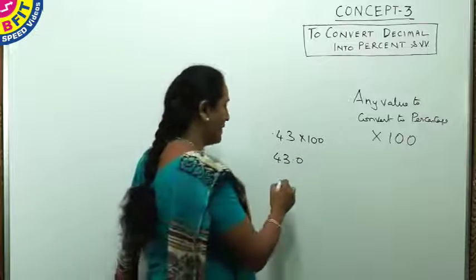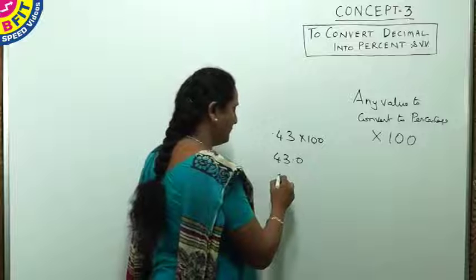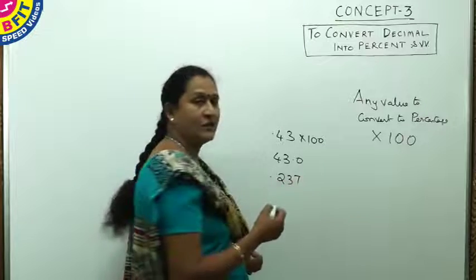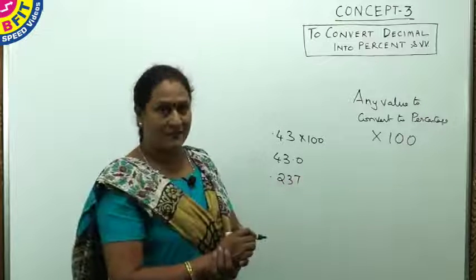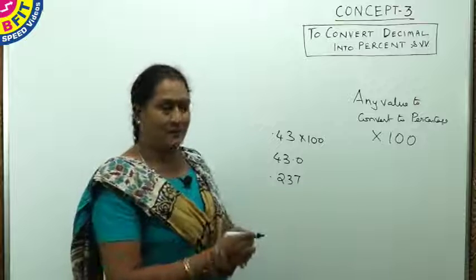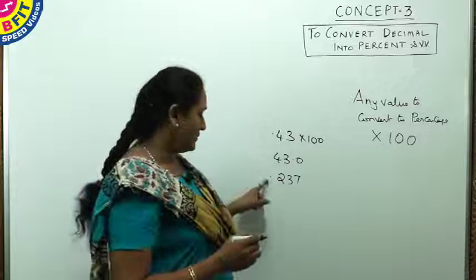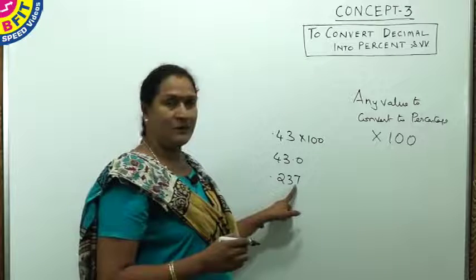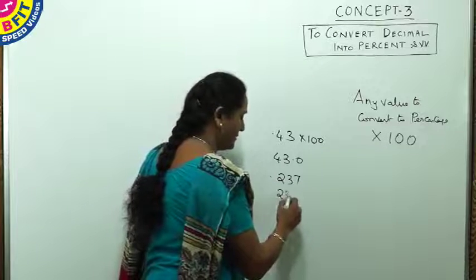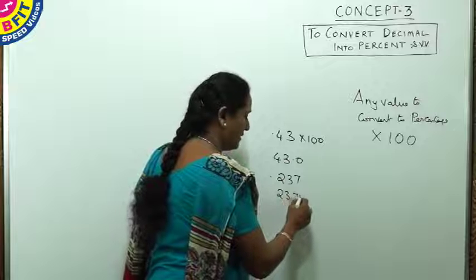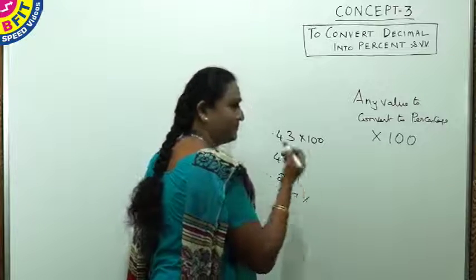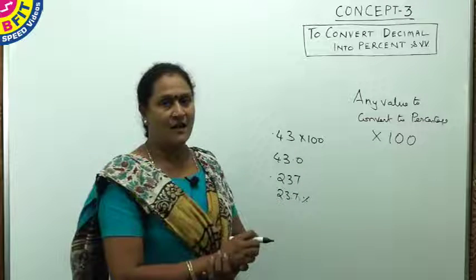Suppose you have another decimal. Multiplying it with 100, we get the percent. Shifting the decimal two places to the right, the answer is 23.7%.